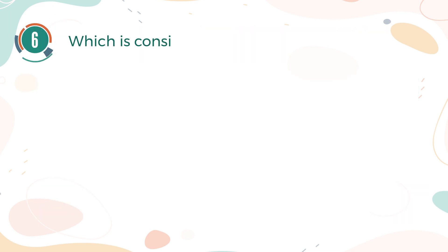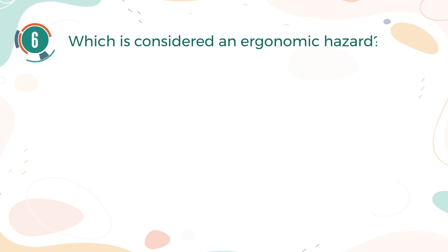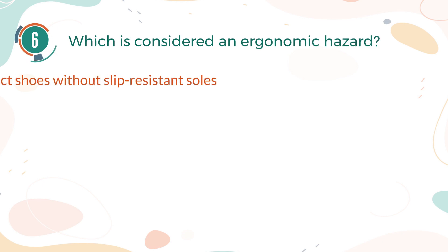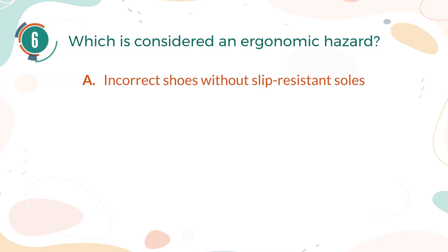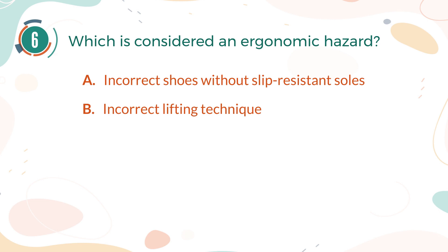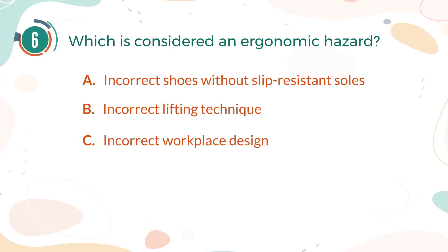Number 6. Which is considered an ergonomic hazard? A. Incorrect shoes without slip-resistant soles. B. Incorrect lifting technique. C. Incorrect workplace design. D. Incorrect spill cleanup.